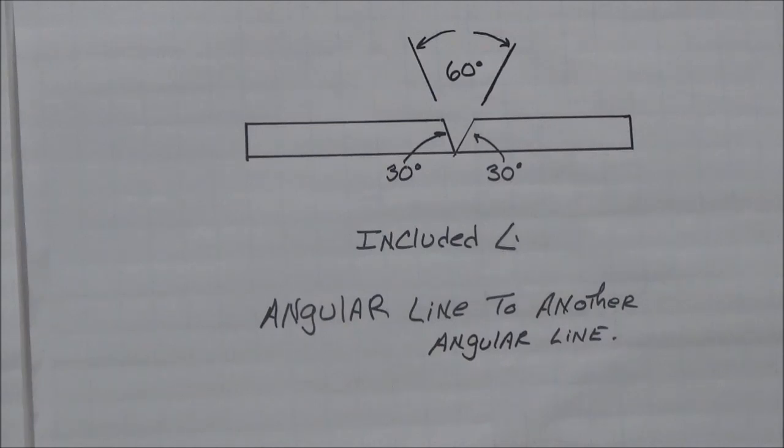Now, the purpose of these dimensions, though, they have two very important functions on your print. Number one, they're going to give you the size needed to locate the part. And also, they're going to give you the size for the materials that you need to fabricate the part. So, not only is it going to show you locations, but it's also going to show you sizes.